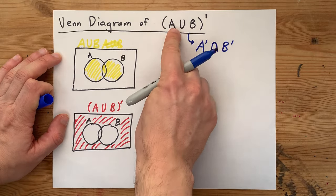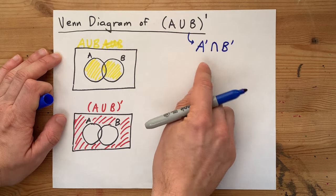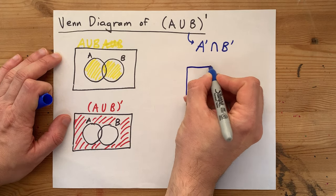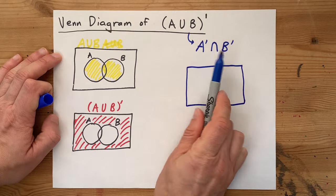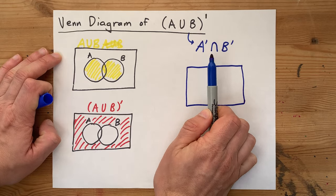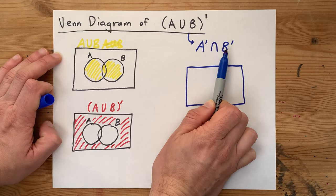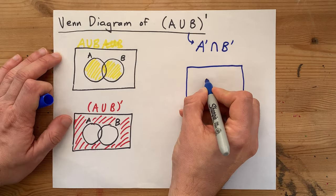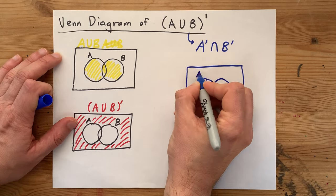So, the complement of A union B is the same as not A intersect not B, which means you are shading only regions that are both, or rather, that are both not in A and also not in B. Intersect requires both of these to be true. And so, if something is in either A or B, it does not get shaded here.